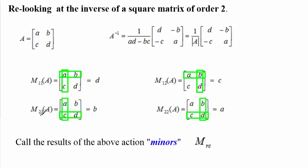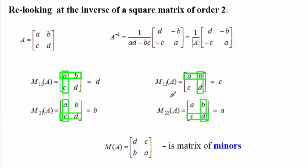Then we delete the second row and the first column, and we're left with B. Lastly, we delete the second row and the second column, and we're left with A. We've named these in terms of row and column — the minor of matrix A, written M_RC. We collect those minors and put them in matrix form, and then let's call this the matrix of minors, M(A), meaning minors of matrix A. They form this kind of matrix taken in that order.